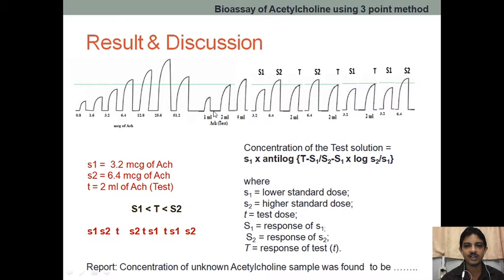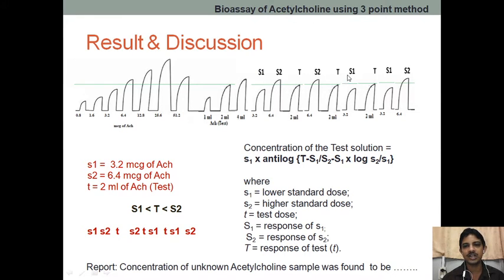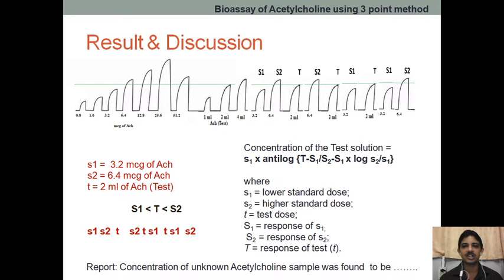How have we injected? S1 is 3.2, S2 is 6.4, and T is 0.2 ml. The injection sequence is: S1, S2, T, S2, T, S1, T, S1, T, S1, S2. By this process we have injected the different concentrations and found the responses.